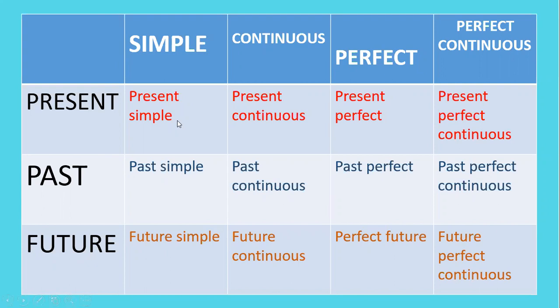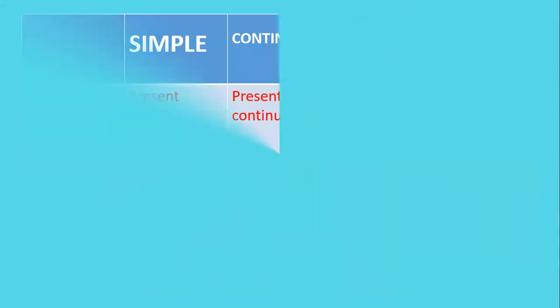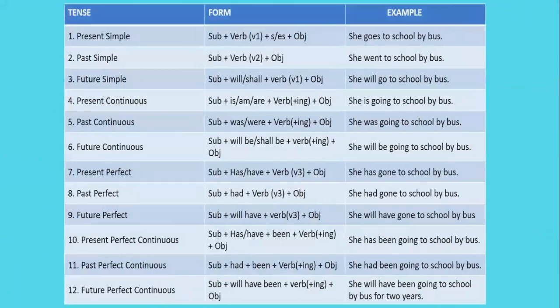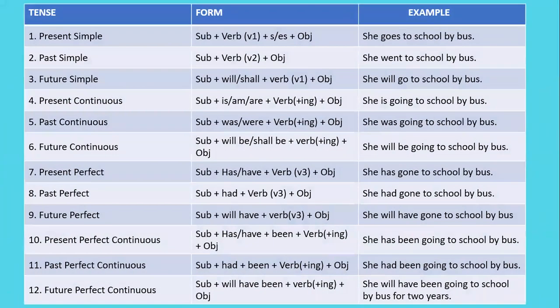The very first one: simple present tense, and then present continuous, present perfect, and present perfect continuous. This slide talks about the sentence structure of each of these tenses.